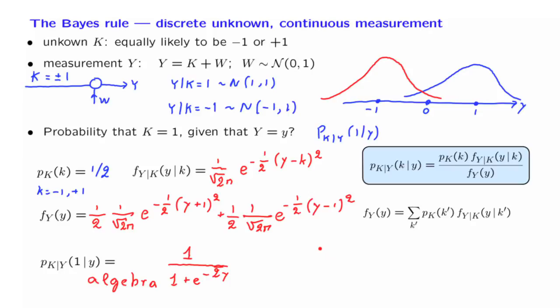Let us try to make sense of this expression. Let's see what it looks like by plotting it as a function of Y. So what we're plotting here is this expression. If Y is very large, as Y goes to plus infinity, this term disappears, and we obtain a 1.